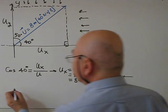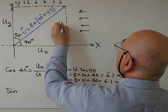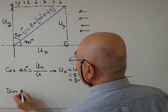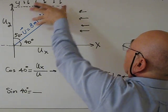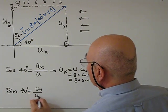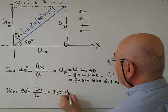Again with this triangle, this is uy. When we look at this triangle, sine 40 equals opposite over hypotenuse, uy over u. From here uy equals u times sine 40.